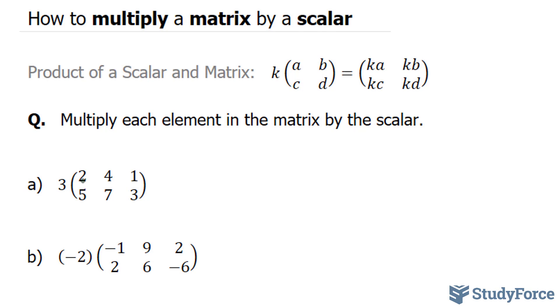So you'll take this 3, multiply it to the 2, and that gives us 6, 12, 3, 15, 21, and 9. That is your final matrix for Part A.